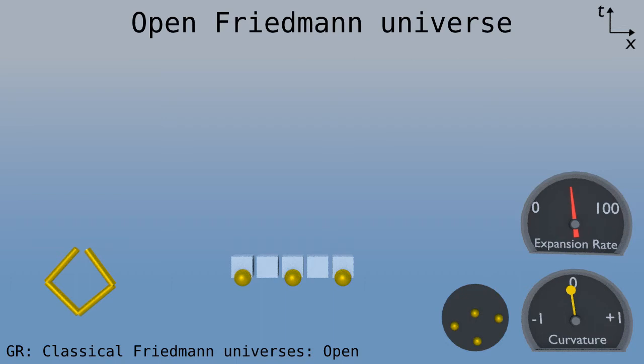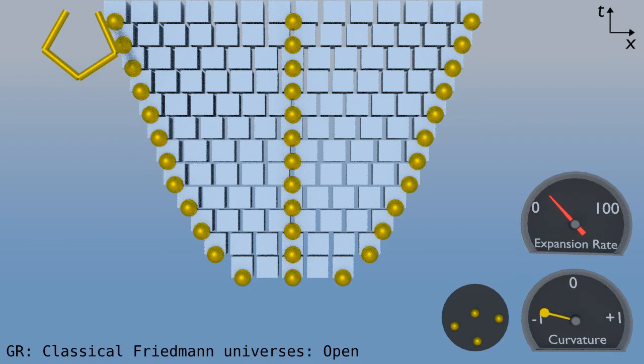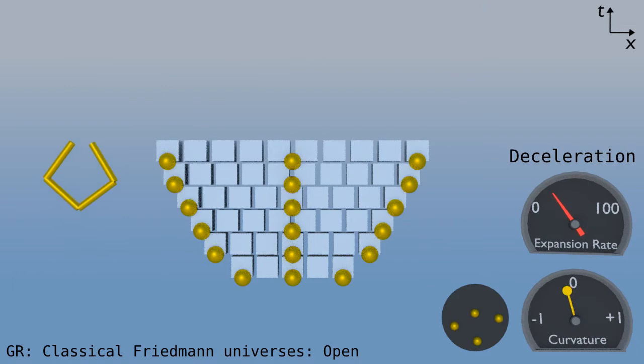An open Friedman universe looks similar to a flat one, in that it keeps expanding, but at a faster rate. Look closely, and we'll see more differences. First, the density of particles is less. We end up with some negative curvature, which we see both in the yellow dial and also in the square of sticks, which is now open. When we animate it, look at the two dials. Again, the speedometer shows that the rate of expansion decelerates, but not towards zero. Meanwhile, the curvature gets more negative. We see this both in the yellow pointer and in the square of sticks. Let's run that one more time.